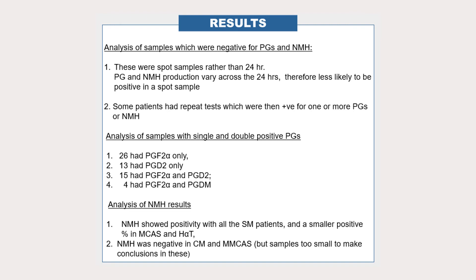The next part of this slide gives a breakdown of which prostaglandins were positive in the single and double positive prostaglandin tests. The analysis of the N-methylhistamine results showed positivity with all of the mastocytosis patients but negativity in some of the groups, which could be because the sample sizes were too small in terms of patient numbers to demonstrate this.